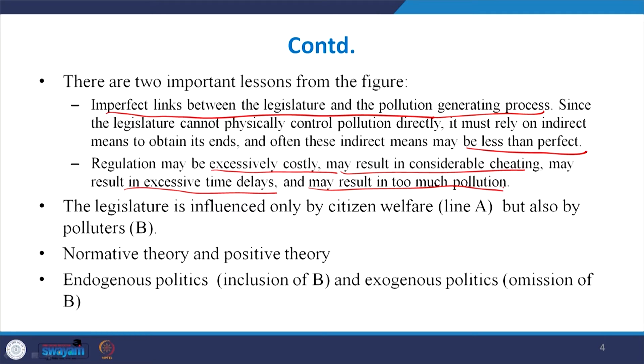The second lesson we can draw from this political economy model of regulation is that regulation may be excessively costly, may result in considerable cheating, may result in excessive time delays, and may result in too much pollution. It is not necessary that the regulation is cost effective. Regulation is very costly because a team of engineers must be employed to monitor the activities of companies. Moreover, it is very difficult to decide what should be the level of pollution. Whether a particular technology suggested by the regulator to be installed by a particular company will achieve the desired result is a big question mark. Sometimes companies themselves may not share valuable information to the regulator, so getting the required information about many aspects of the company is very difficult.